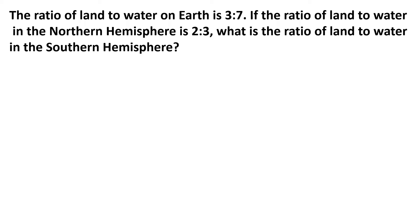If we represent the whole earth as E, then the first line of the problem states that the ratio of land to water on earth is 3 to 7. What that means is if we consider the whole earth as 3 plus 7, or 10 parts, then 3 out of those 10 parts are land and 7 out of those 10 parts are water.